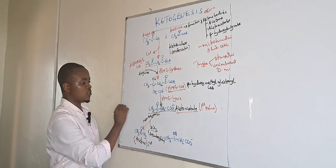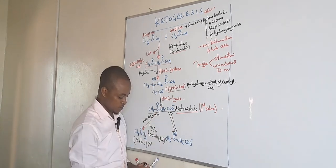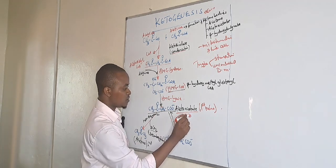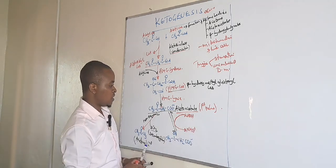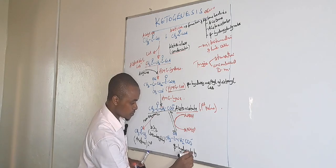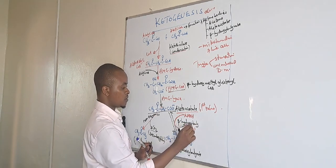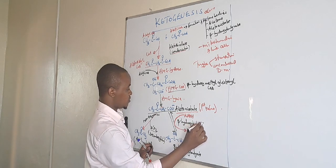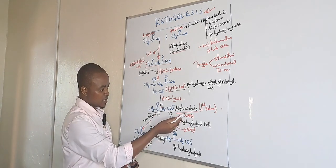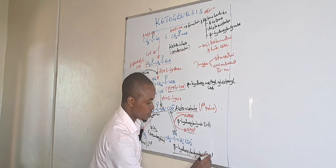Alternatively, if we need to convert acetoacetate into beta-hydroxybutyrate, we need NADH. This is an enzymatic reaction involving utilization of NADH from NAD+, and it occurs in the presence of beta-hydroxybutyrate dehydrogenase. This enzyme adds NADH, converting NAD+ back, and leads to the formation of beta-hydroxybutyrate, which is the third ketone body.